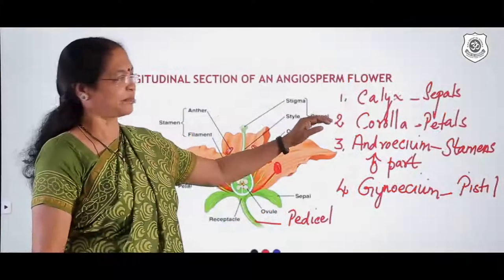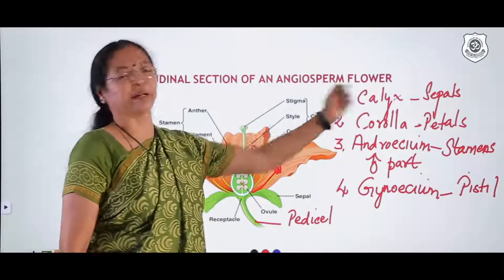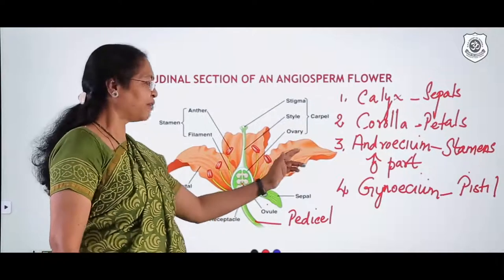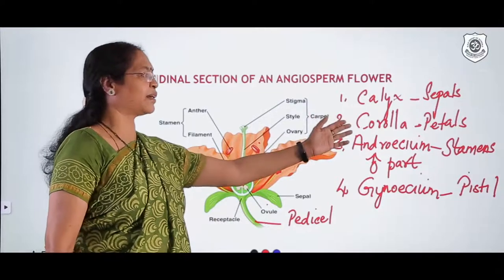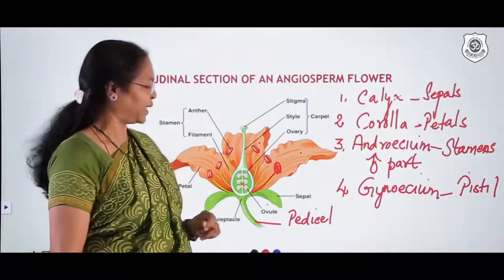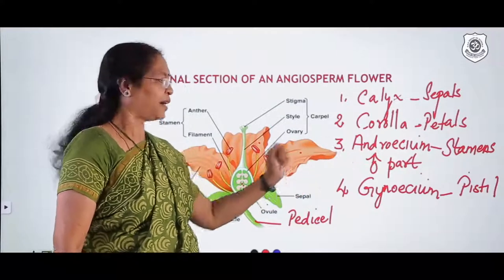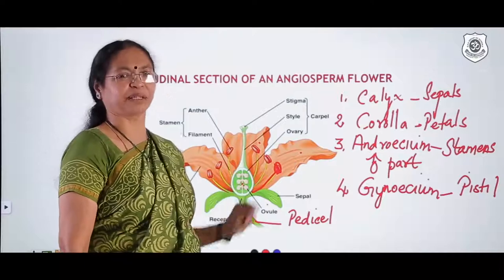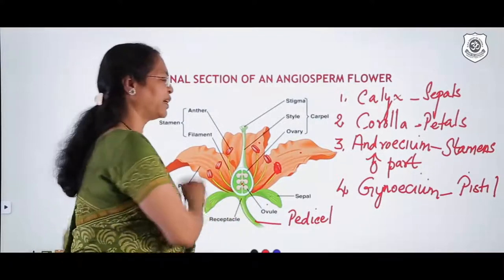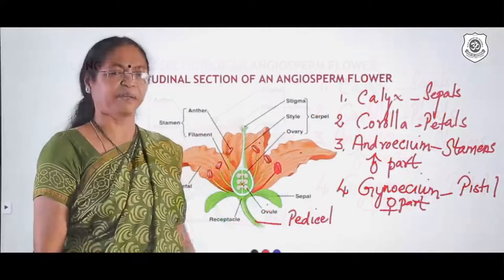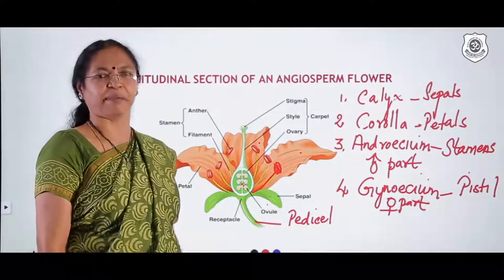To summarize the four whorls: calyx is made up of green sepals that protect the flower in bud condition; corolla is made up of brightly colored petals to attract agents of pollination; androecium is the male part made up of stamens, which are the male sex organs producing gametes; and gynoecium is the female part made up of pistil or carpel, which produces the female gamete.